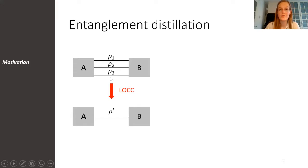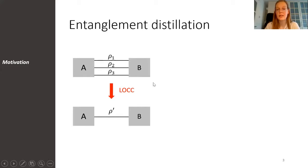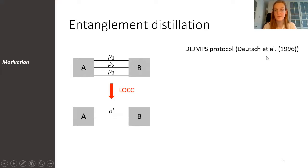This can be done using entanglement distillation. The idea of entanglement distillation is that we start with a number of states with a lower fidelity, and then using local operations and classical communication only, we transform this into a smaller number of states with a higher fidelity. A well-known example of such a distillation protocol is the DAMES Protocol, which was presented by Deutsch et al. in 1996.